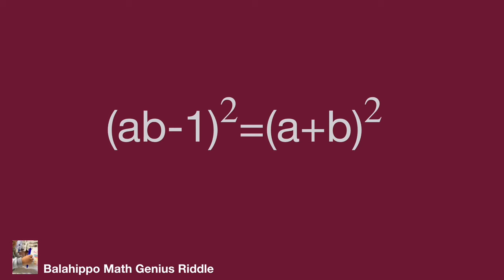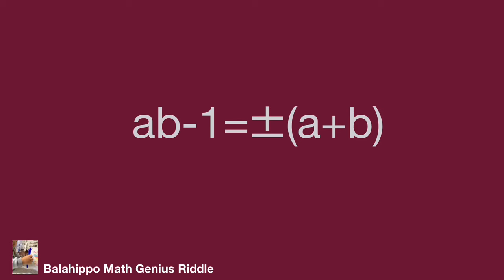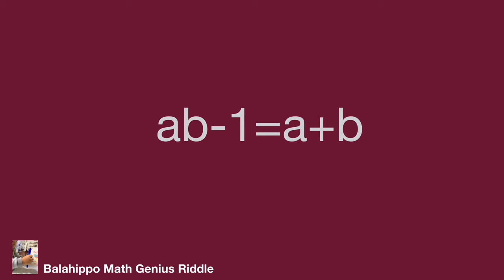So we get a new equation: (ab+1)² = (a+b)². Taking square roots of both sides gives ab+1 = ±(a+b). From this, we find two cases. The first case: ab+1 = a+b.